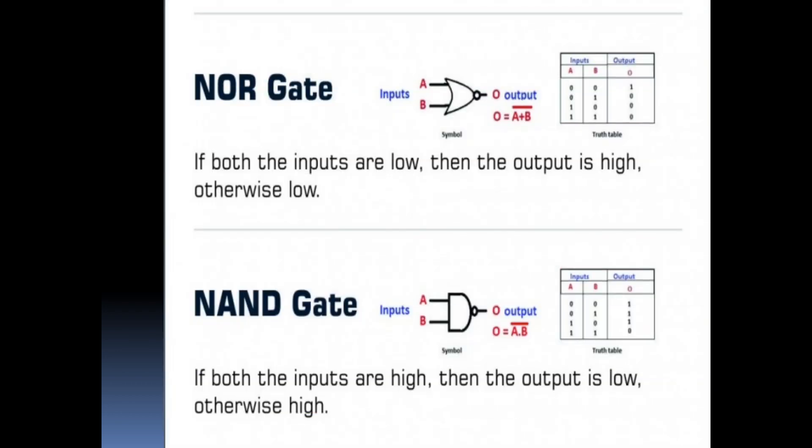Let's understand the derived gates. Derived gates are the gates which are derived from the fundamental gates. The first derived gate is NOR gate. The NOR gate is the combination of NOT gate and OR gate. It has two or more inputs but only one output. It produces output 1 when all the inputs are 0.